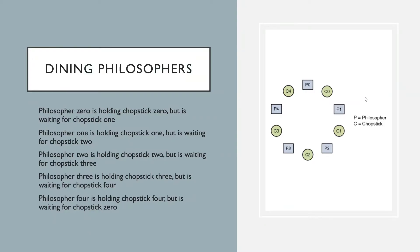Even if two philosophers simultaneously need to eat, it won't result in any problem. But consider a situation wherein all of the philosophers need to eat simultaneously. Since P1 has only C1 he picks it up, P2 picks up C2, P3 picks C3, P4 picks C4, and P0 picks C0 — but remember we need two chopsticks to complete eating. So each philosopher waits for another to finish, but ultimately none of them end up eating and they all get stuck in an infinite loop. That's fundamentally what deadlocks are.